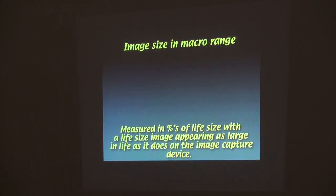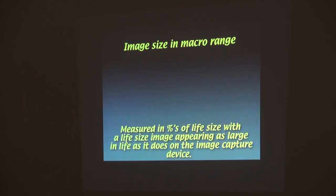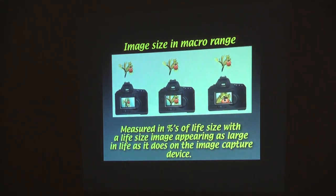Macro photography is measured in percentages of life size. If you buy a macro lens it'll say half life size, third life size, fourth life size. What does that mean? A life-size image means the subject is reproduced at its actual size on the sensor — if it's two millimeters long, it's two millimeters long on the sensor. That's life size. For example, with half life size, the subject in the image is half as large as it is in real life — the macro lens allows you to get an image half the size you see in reality.